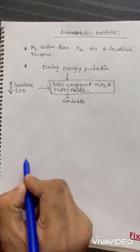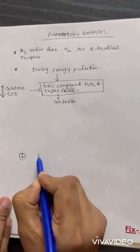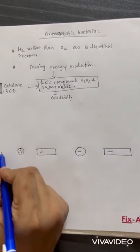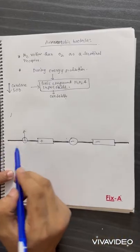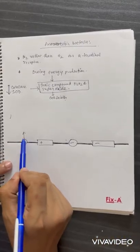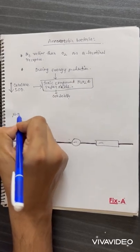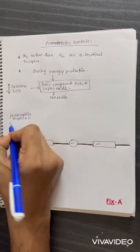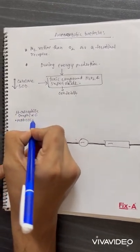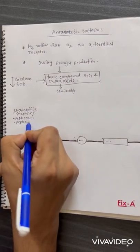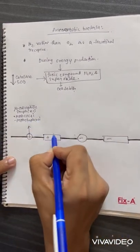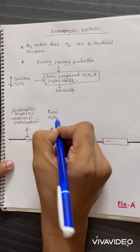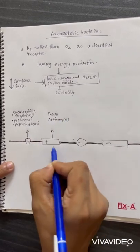There are gram positive cocci, gram positive bacilli, gram negative cocci, and gram negative bacilli. Above the diaphragm, the cocci are microaerophilic streptococcus, peptococcus, and peptostreptococcus. The gram positive bacilli are Propionibacterium acnes and Actinomyces.